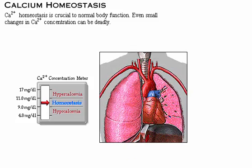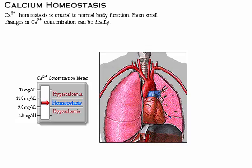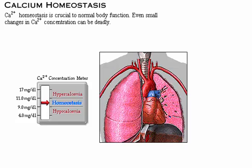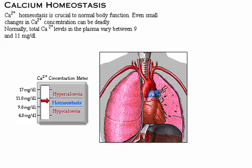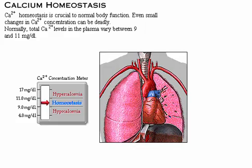Calcium homeostasis is crucial to normal body function. Even small changes in calcium concentration can be deadly. Normally, total calcium level in the plasma varies between 9 and 11 milligrams per 100 milliliters.